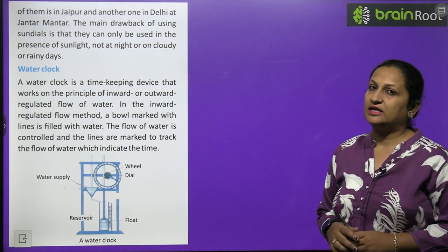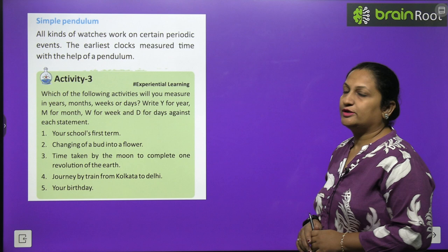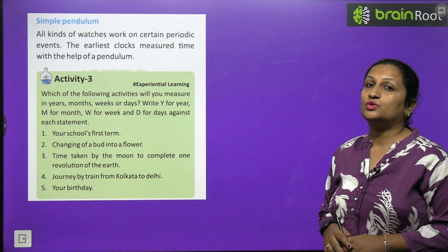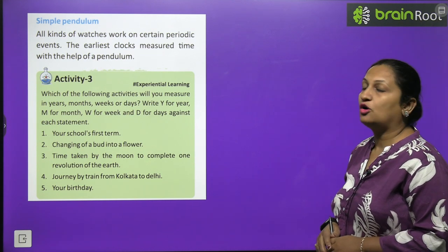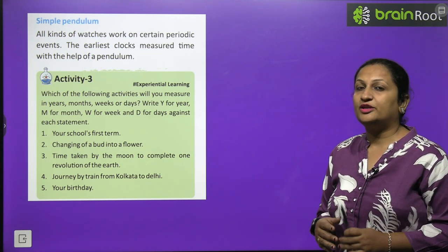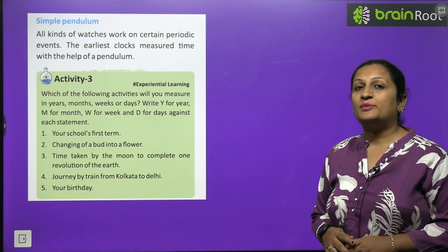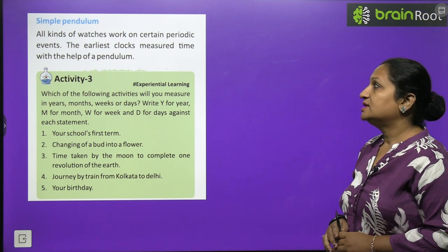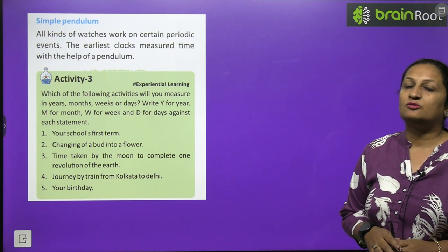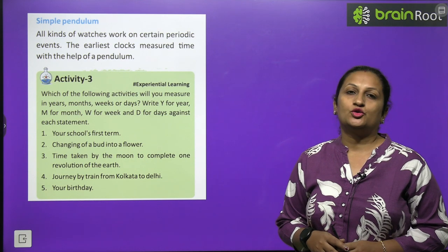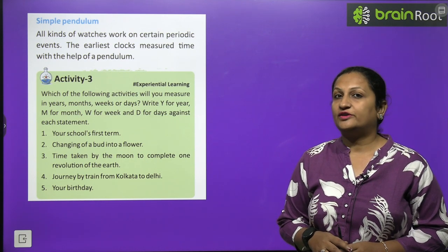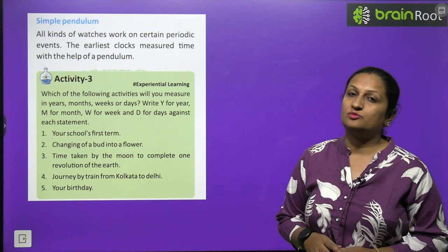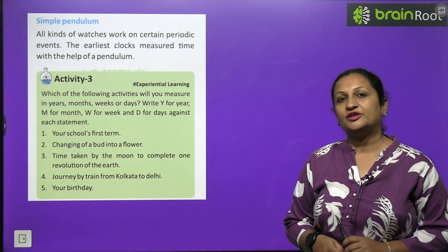Simple pendulum: many wall clocks and watches work on the principle of periodic events — periodic motion is motion that repeats itself after a fixed interval of time. Similarly, in a simple pendulum, it repeats its motion after a fixed interval of time. This is why older clocks used a simple pendulum to measure time.